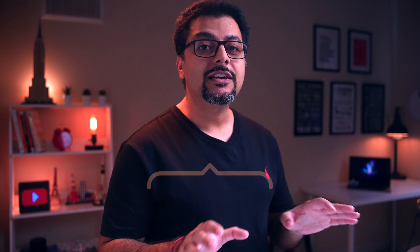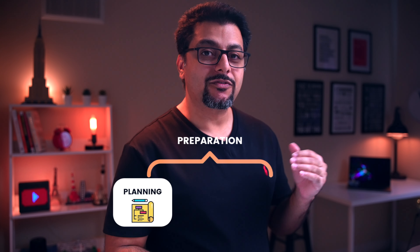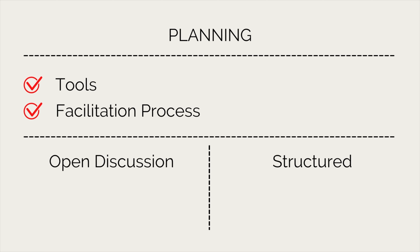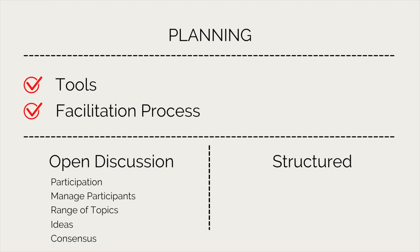Let me tell you exactly what it takes to facilitate successful meetings and events. There are essentially two parts to successfully facilitating an event or a meeting: preparation and delivery. Preparation has three components. The first component is planning. Before the meeting starts, you plan the process — you select the tools that will help you and your team progress towards the desired outcome and choose the appropriate facilitation process. For example, do you want an open discussion or a more structured step-by-step discussion? Ask yourself whether using an open discussion will help you achieve the participation you need, manage the discussion with the number of participants involved, address the wide range of topics required, come up with enough ideas and solutions, and gain the desired consensus or buy-in. If the answer is no — and usually it is — then it is safe to go with a structured process.